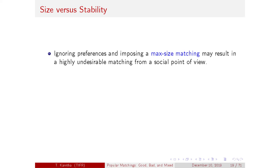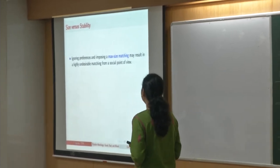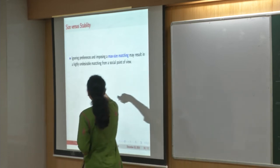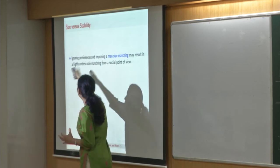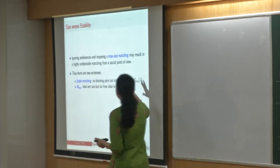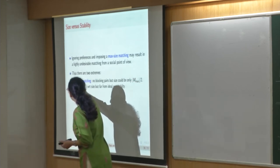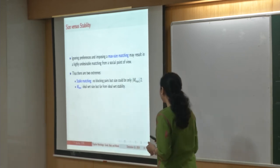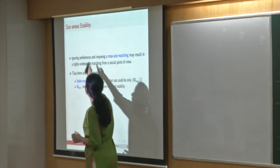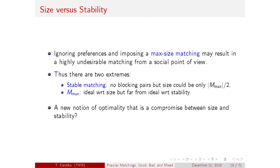One could say, if the size of a matching is important, why not ignore preferences and just impose a max size matching? But that's not good from a social happiness point of view — vertices do have preferences, and ignoring them completely is not a desirable solution. We have two extremes: stable matchings that are absolutely sensitive to vertex preferences but may suffer in size, and maximum size matchings that are good for size but totally ignorant of preferences. Is there a notion of optimality sandwiched between size and stability?